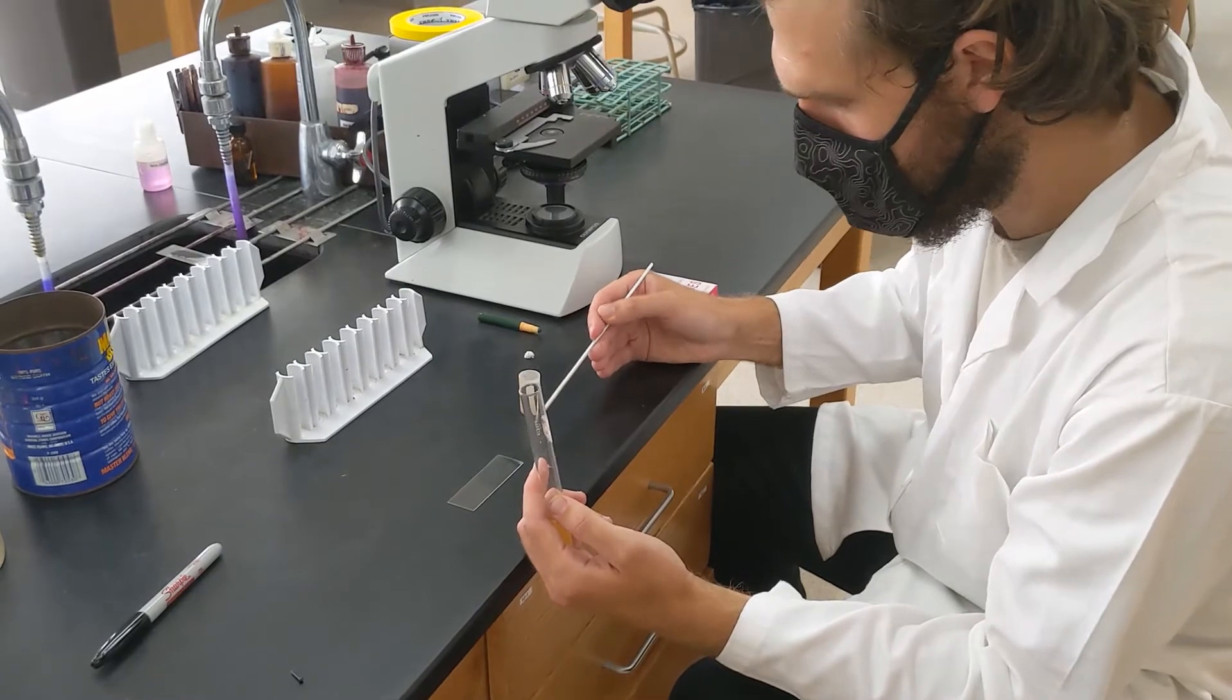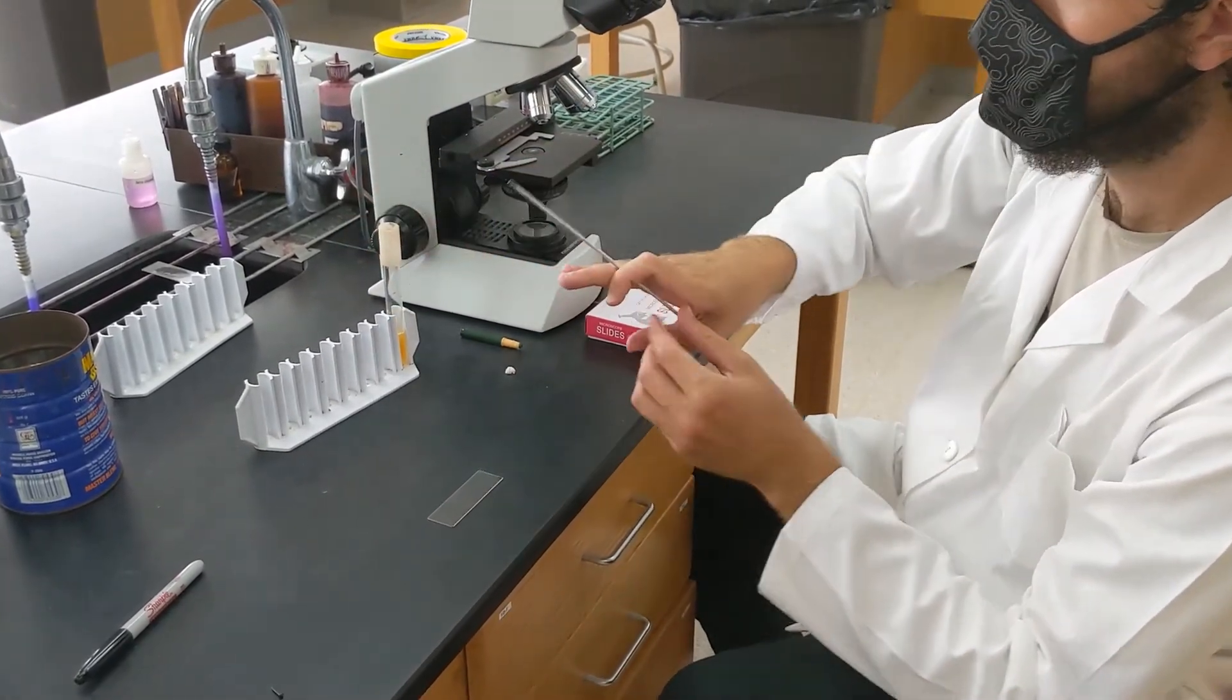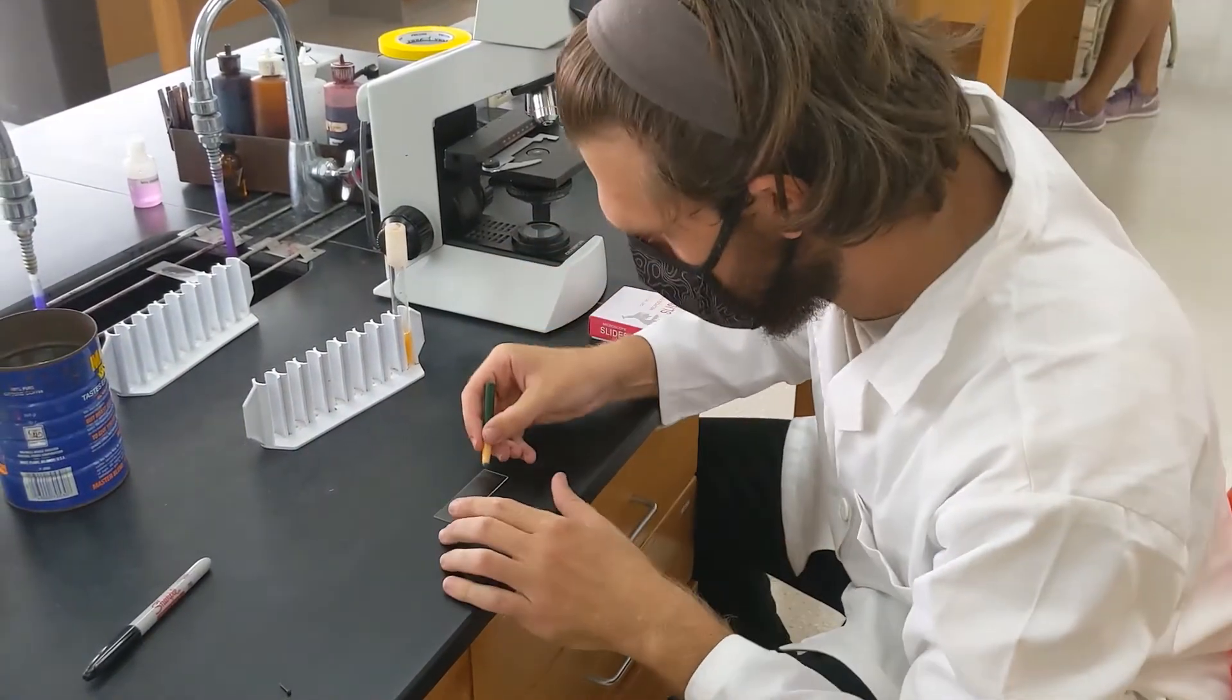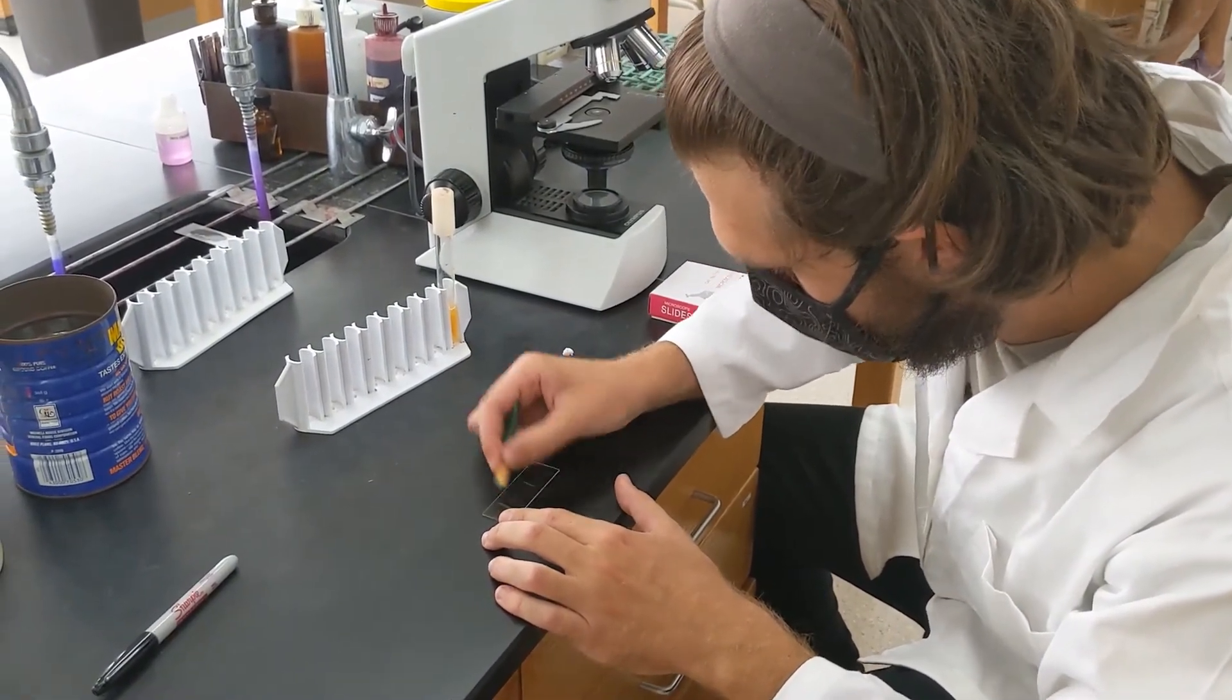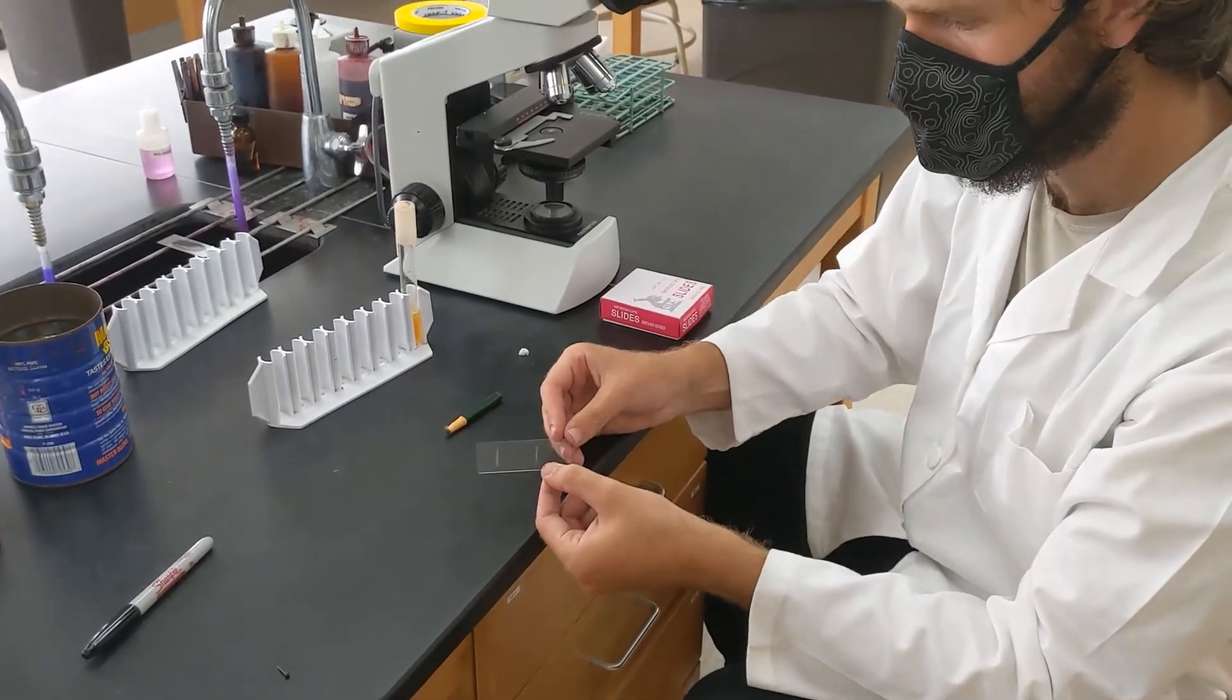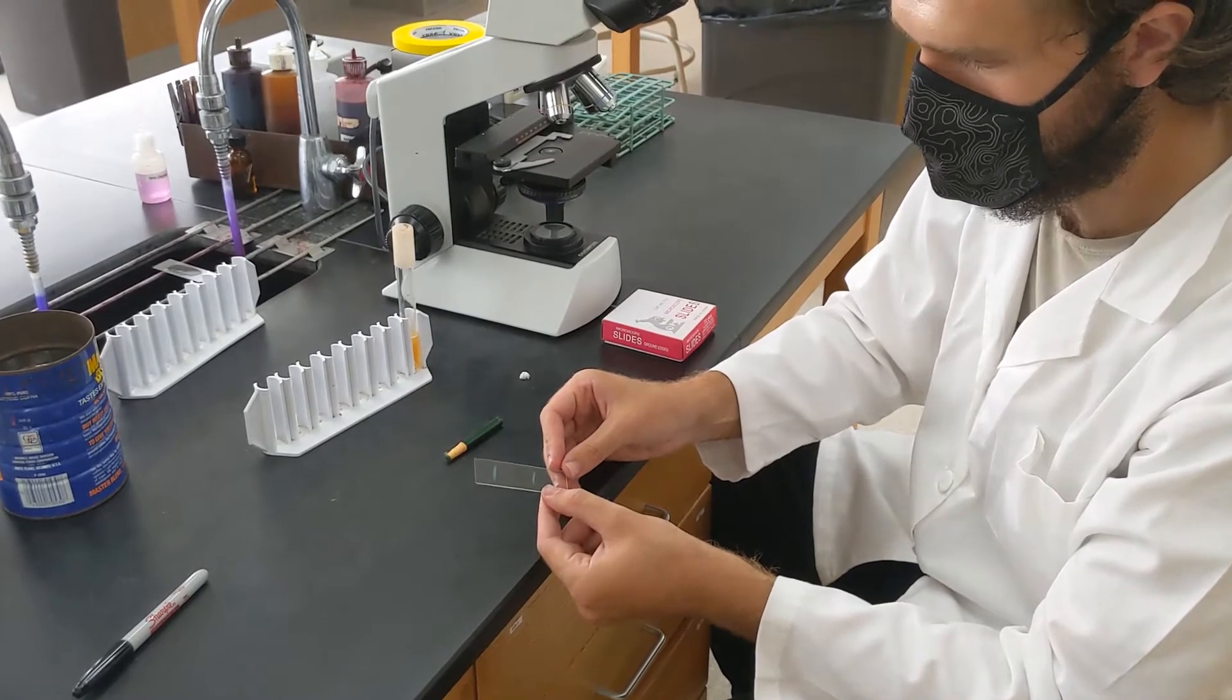Wherever you do end up spreading the sample, it's helpful to mark it off, to mark off the area. So what I'm going to do is use this wax pencil and just draw little boundaries roughly where I've streaked out the sample. This way I know in the general area where I should be focusing with the objective lenses.